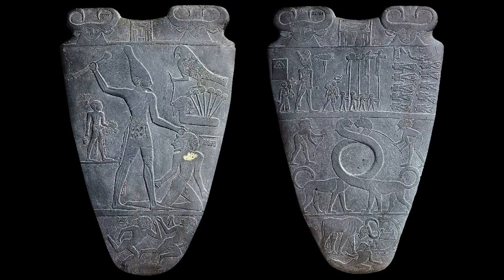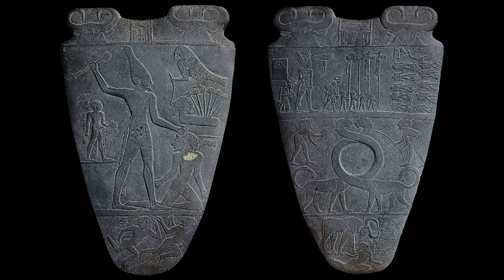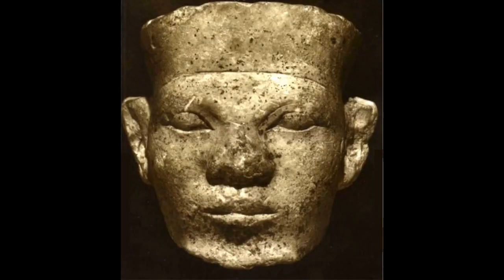The unification of Upper and Lower Egypt was solidified with a man known as Menes or Narmer, a ruler with origins in Upper Egypt. This stone sculpture of his face suggests strong affinities with other black Africans.